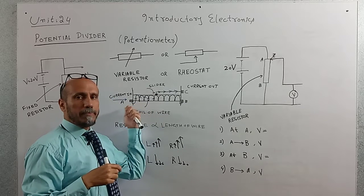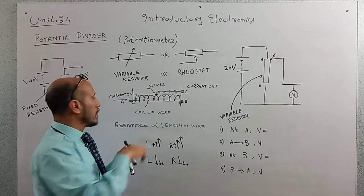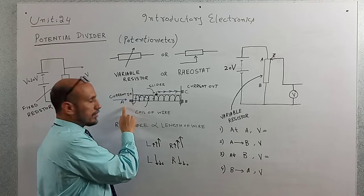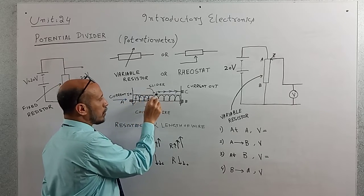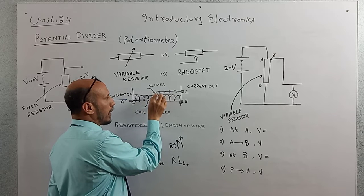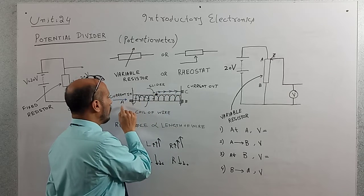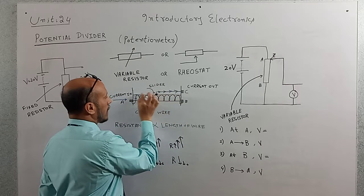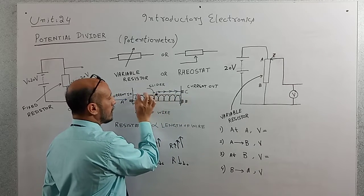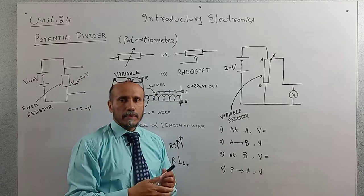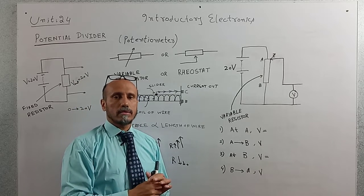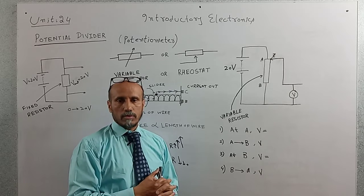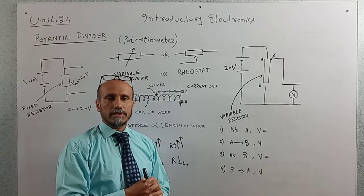The current passing through the coil is shown in blue — this is the input current. When current passes through the coil and reaches the point of contact of the slider, it moves from point A to point C. As the slider moves from left to right, the value of current passing through the variable resistor changes, and consequently the voltage across the resistor also changes.